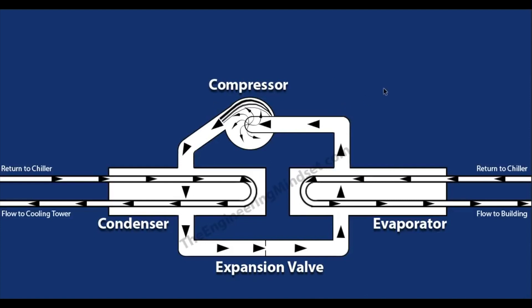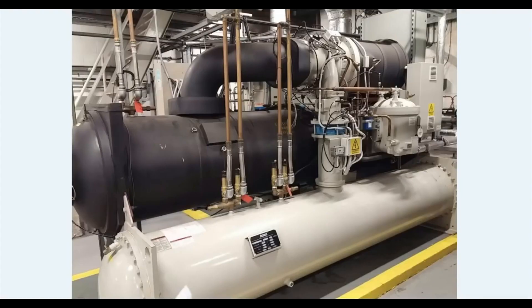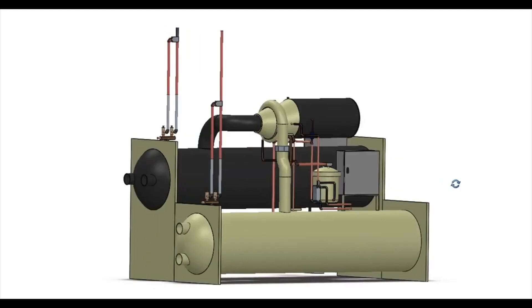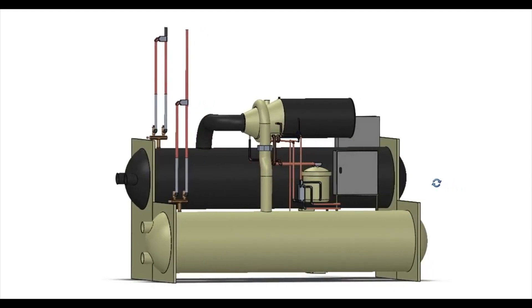These are the four main components and three main circuits — they will appear in every chiller of all types, sizes, and shapes. Let's now apply this knowledge to a real scenario. This is a McQuay centrifugal chiller and we're going to look around it to name the components. Because going around a real chiller is a little bit difficult, I've created a 3D model which will allow us to go around it more easily and without the noise.